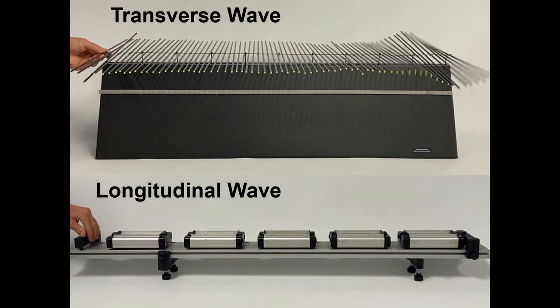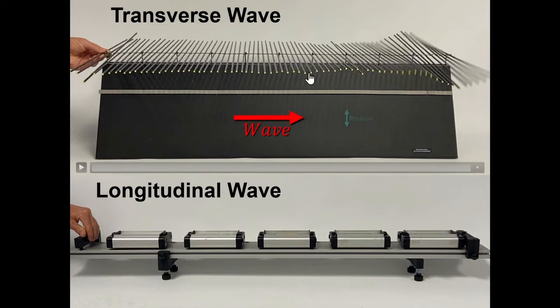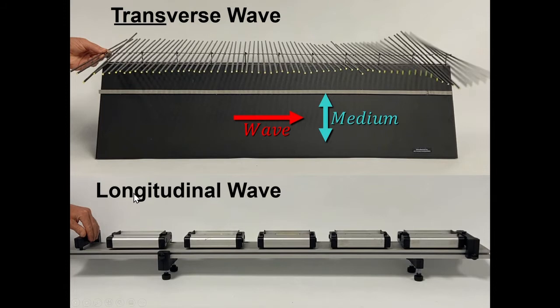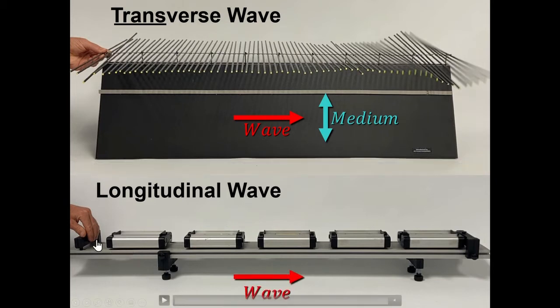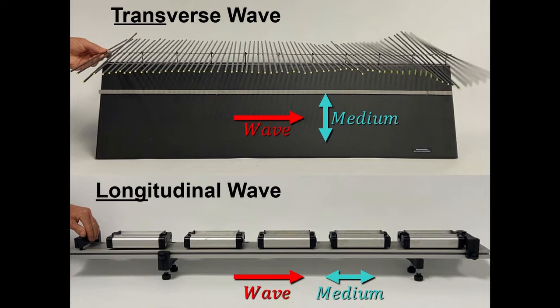The propagation of energy is the spreading out of energy as it goes from one place to another. Another vocabulary word is medium — that's just the material the wave is passing through. The prefix 'trans' means across, so if the wave is traveling left to right, the medium was moving across that, or perpendicular to it. With a longitudinal wave, the medium just moved back and forth parallel to the wave. The prefix 'long' makes me think of 'along' or parallel to.